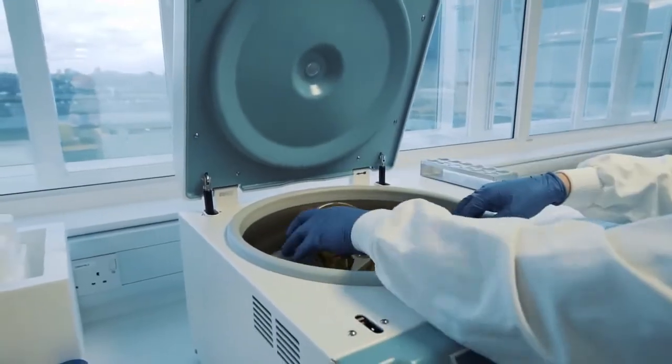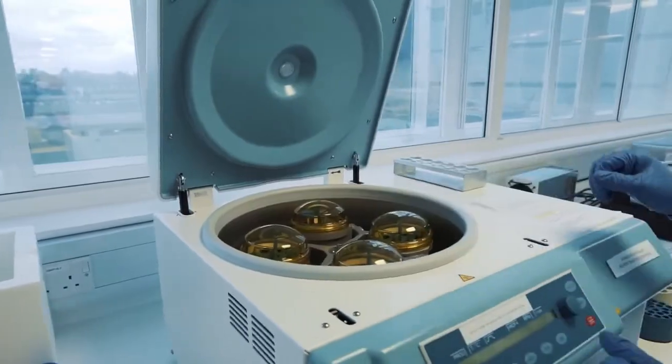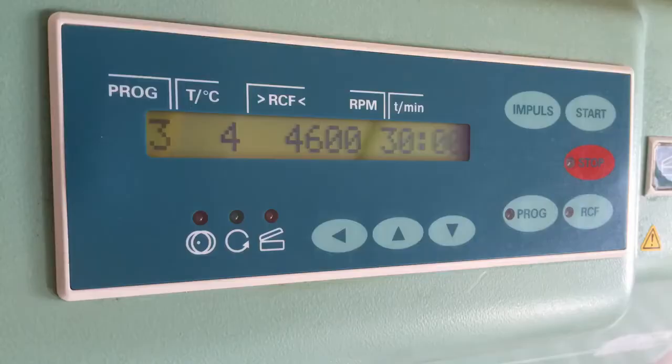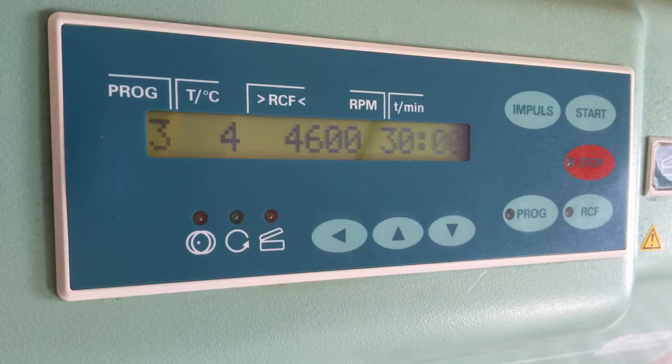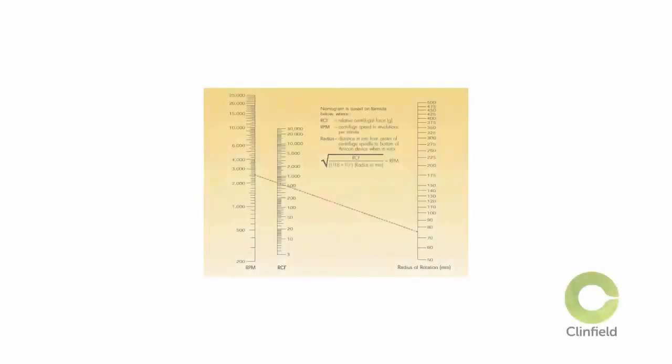You're now ready to set the centrifuge controls to start. Some protocols refer to spinning samples at a specific speed or RPM, which stands for revolutions per minute. While some refer to spinning at a specific G-force or RCF, which stands for relative centrifugal force. This is measured in a number times the force of gravity. For example, 1000 G is 1000 times the force of gravity.